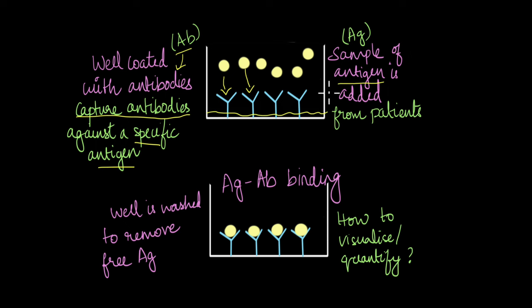Now once this is done, once the sample is added, we're going to wash this well with a buffer solution to remove any free antigens. Why is this important? You see, this sample could have many other proteins that are not needed here for this test. The presence of those proteins could give either a false positive or a false negative result. So to avoid that, the well is washed with a buffer solution.